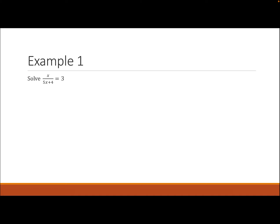For example one, we have x divided by (5x + 4) equals 3. The one denominator we have is 5x + 4. Setting it equal to 0 gives 5x = −4, so x = −4/5. As long as we don't get a solution of −4/5, our solution works.